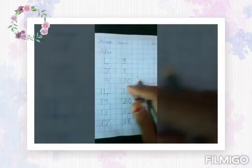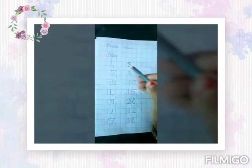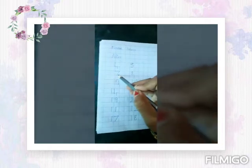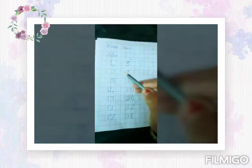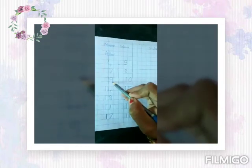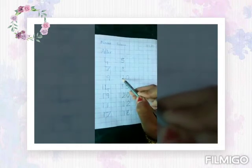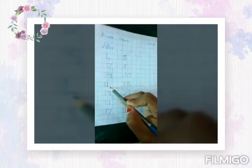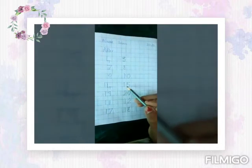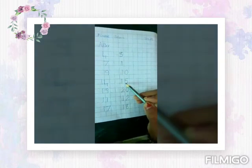Now children will revise. What number is this? 4. What will come after 4? 5. What number is this? 7. What will come after 7? 8. What number is this children? 9. What will come after 9? 10. What number is this children? 14. What number will come after 14? 15.